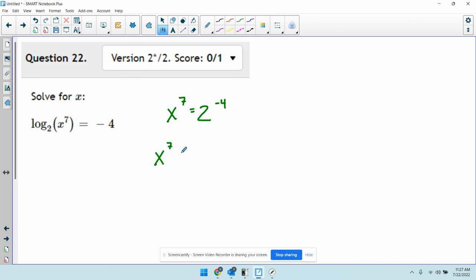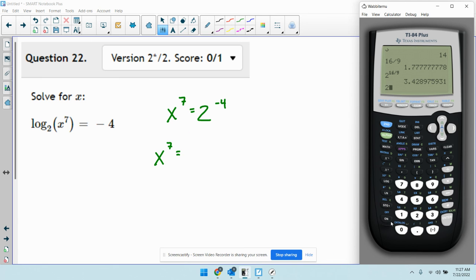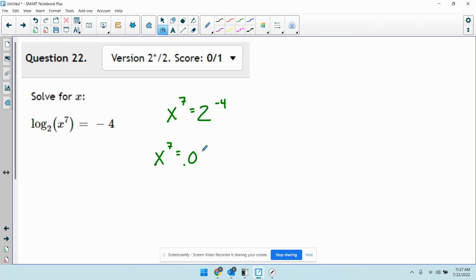So I get x to the 7th equals, we'll do 2 to the power of negative 4. Point 0.625. To get x by itself, since it's x to the 7th, I'm going to take the 7th root.